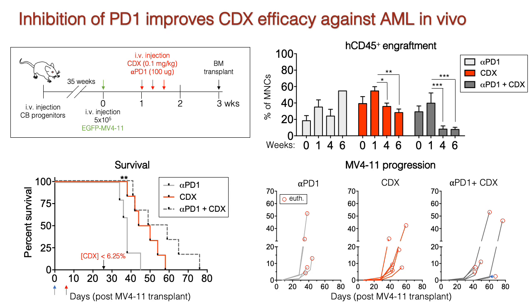Humanized mice were generated with cord blood-derived CD34-positive HSPCs. After stable multilineage engraftment, mice were injected with EGFP-positive MV411. Mice were then treated with three doses of either CDX, anti-PD-1 antibody, or a combination of CDX and anti-PD-1 antibodies. Mice were later transplanted with autologous mouse bone marrow cells to rescue them from the effects of conditioning. Treatment with CDX alone led to decreased frequencies of AML cells in the blood, but only modestly improved median survival relative to anti-PD-1 alone. In contrast, co-treatment with CDX and anti-PD-1 antibodies significantly increased median survival and was associated with decreased PD-1 expression on T cells.